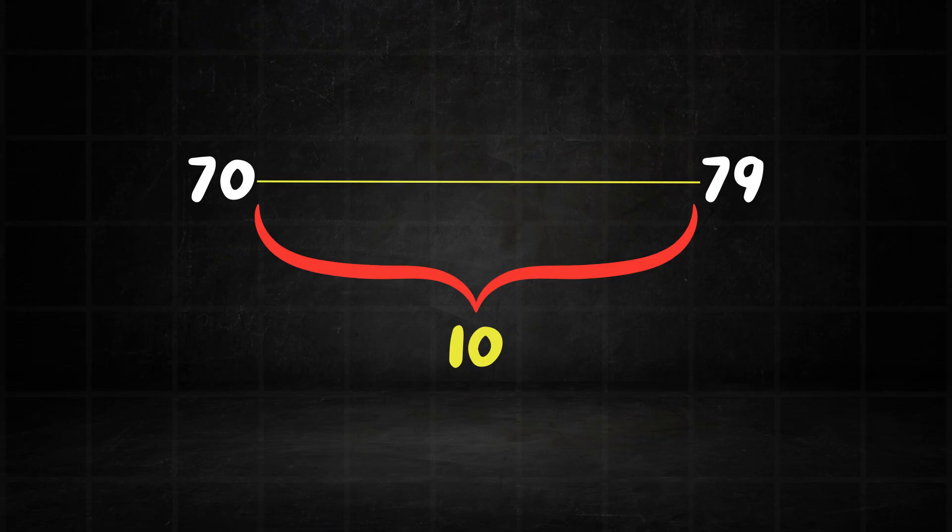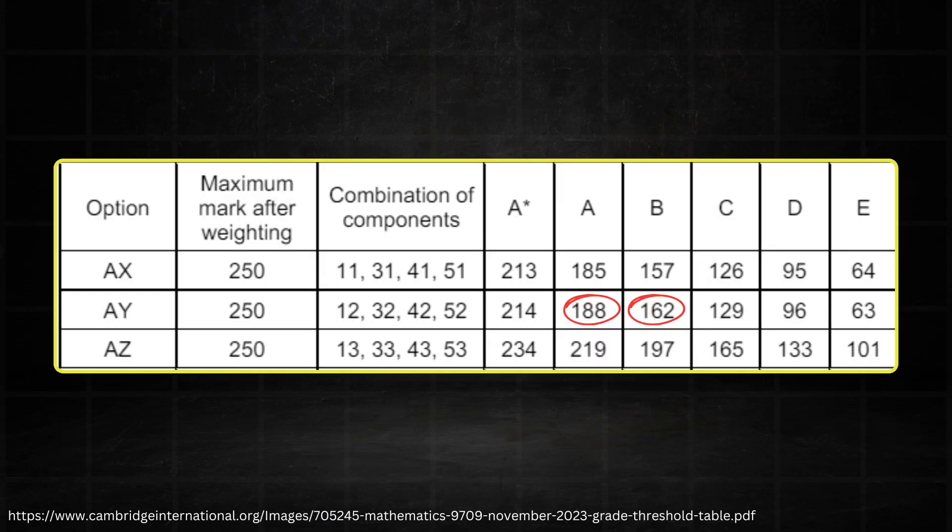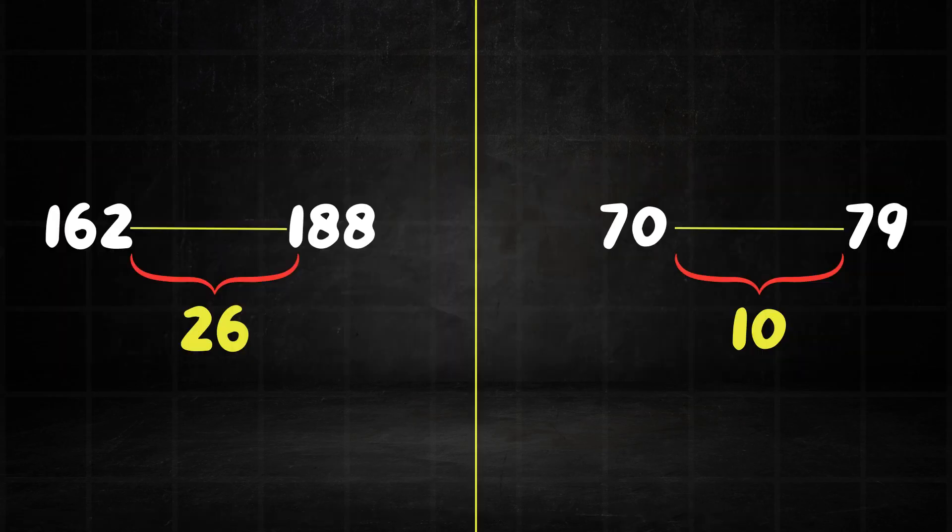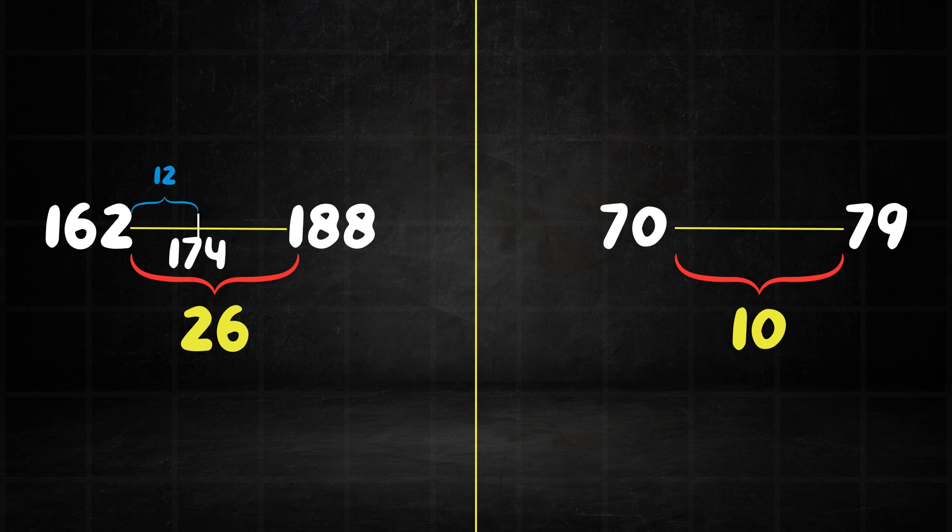Now if we look at the grade thresholds, a B lies between 162 and 188. So if we're considering this as a class, that's a class width of 26 marks. 174 is 12 marks away from our lower bound, which is 162.